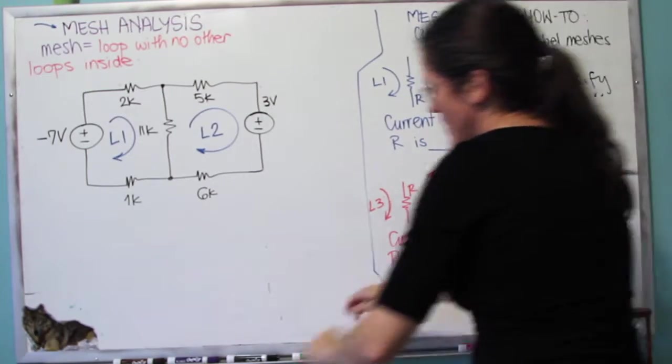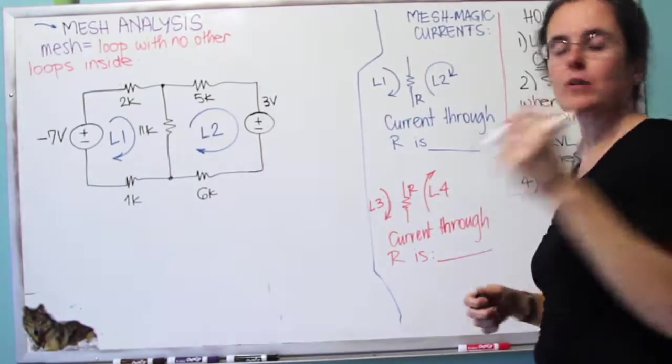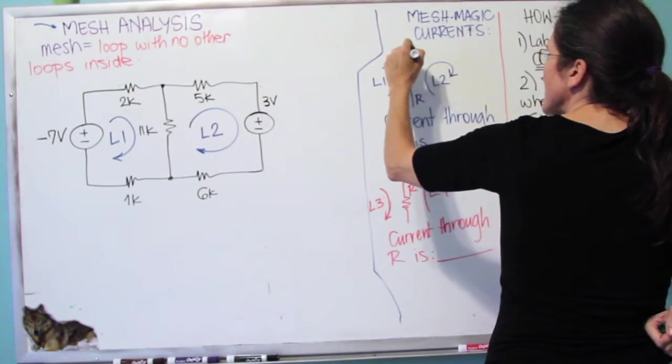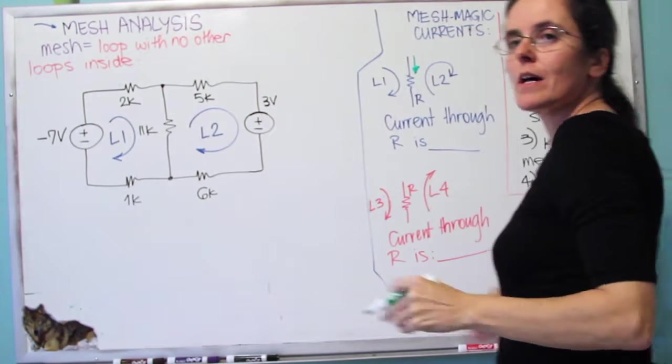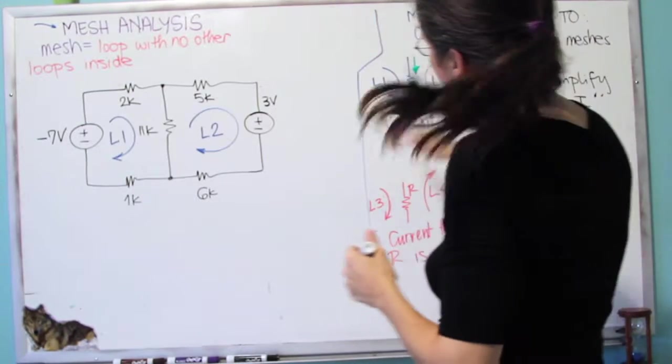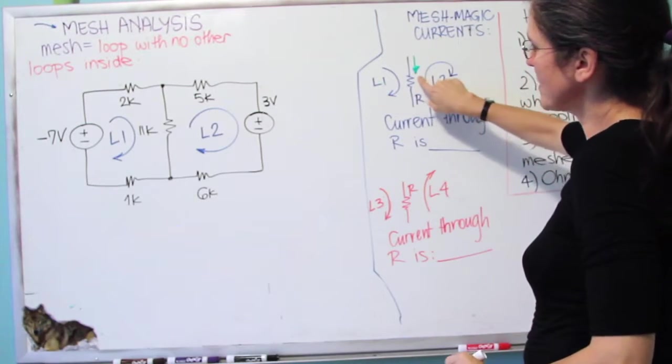And assuming that, I'm going to use my green marker to say that my current is going down through the resistor. You can define the current however you want. The current is going down.